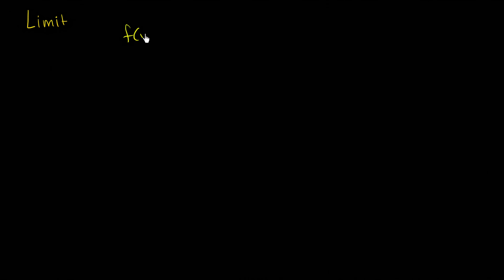So let me define a function here, a kind of simple function. Let's define f of x. Let's say that f of x is going to be x minus 1 over x minus 1. And you might say, hey Sal, look, I have the same thing in the numerator and the denominator. If I have something divided by itself, that would just be equal to 1.